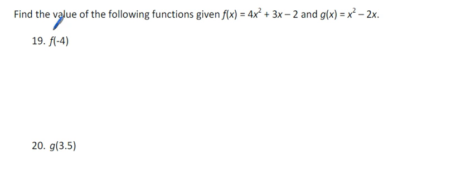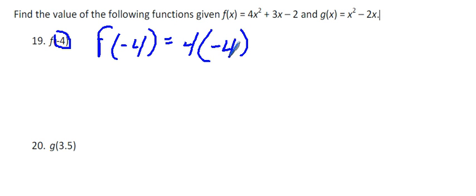Number 19 asks us to find f of negative 4, which means we are going to substitute in the negative 4 for x in the f of x problem. So f of negative 4 equals 4 times negative 4 squared plus 3 times negative 4 minus 2.